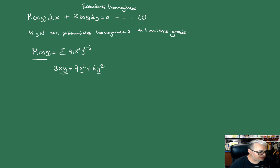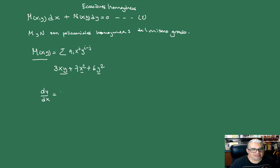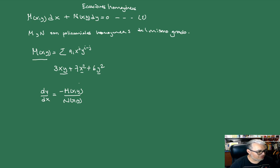Esto lo podemos reescribir como una ecuación diferencial de la siguiente forma: la derivada de y respecto de x va a ser una función racional, porque tenemos dos polinomiales homogéneas del mismo grado. En este caso va a ser menos M(x,y) sobre N(x,y). Si el lado derecho es una función racional construida a partir de dos polinomiales homogéneas del mismo grado, decimos que es una función homogénea. Hay tres propiedades que van a ser útiles.